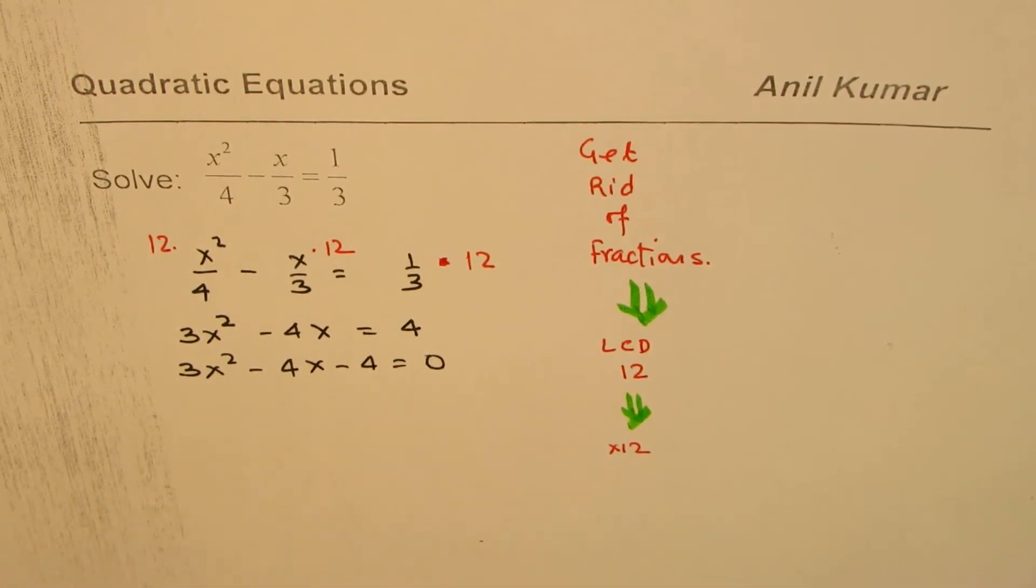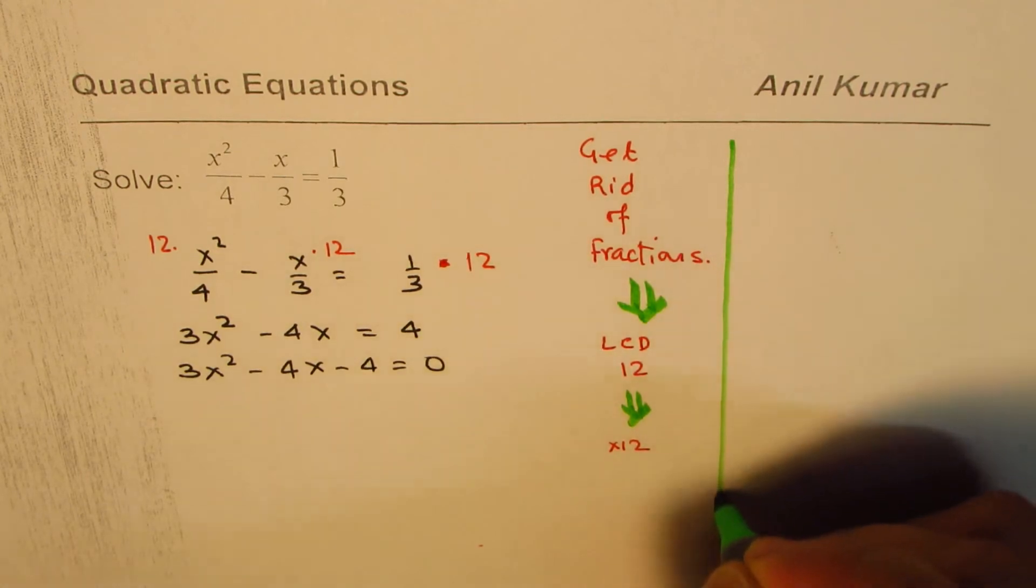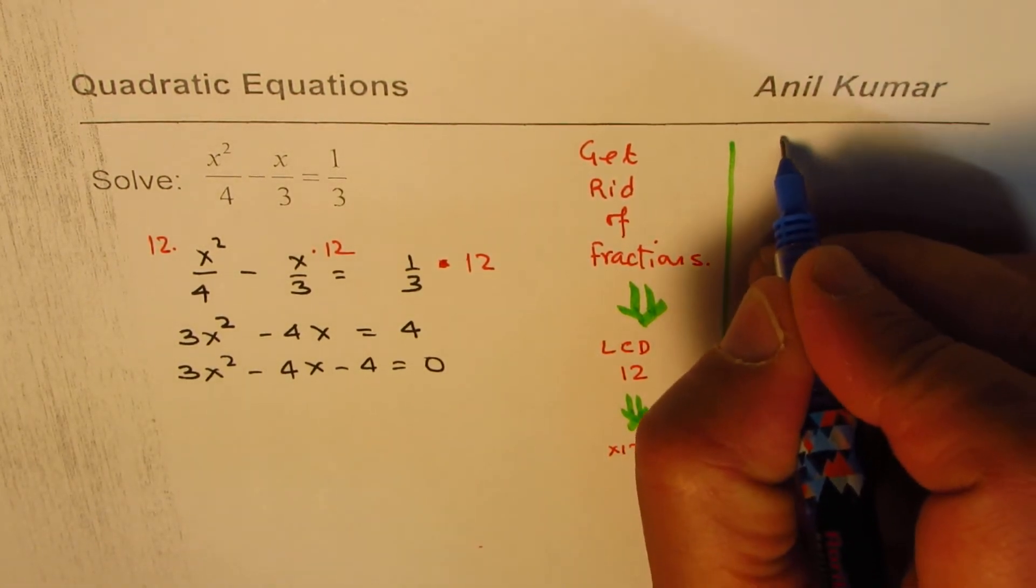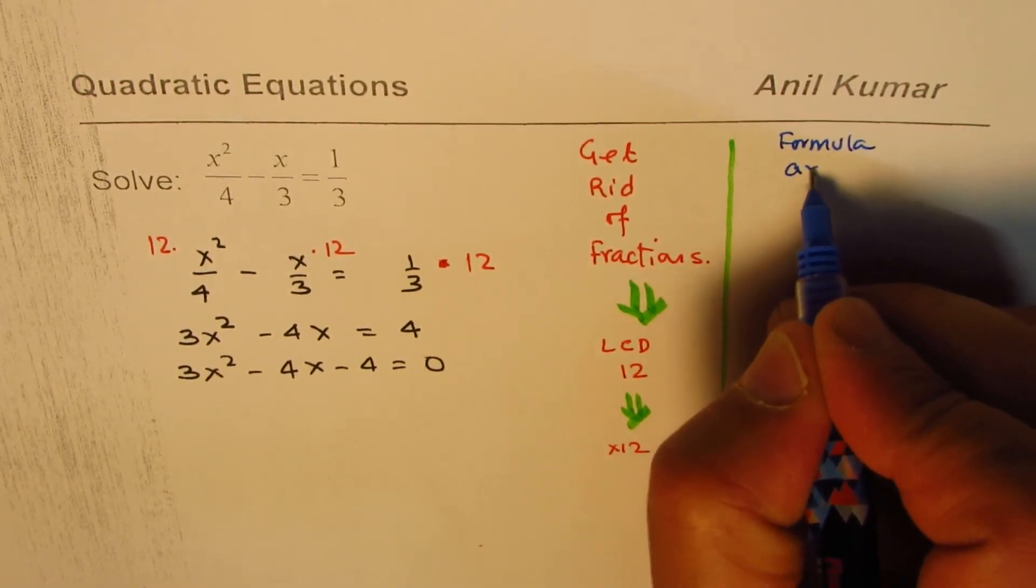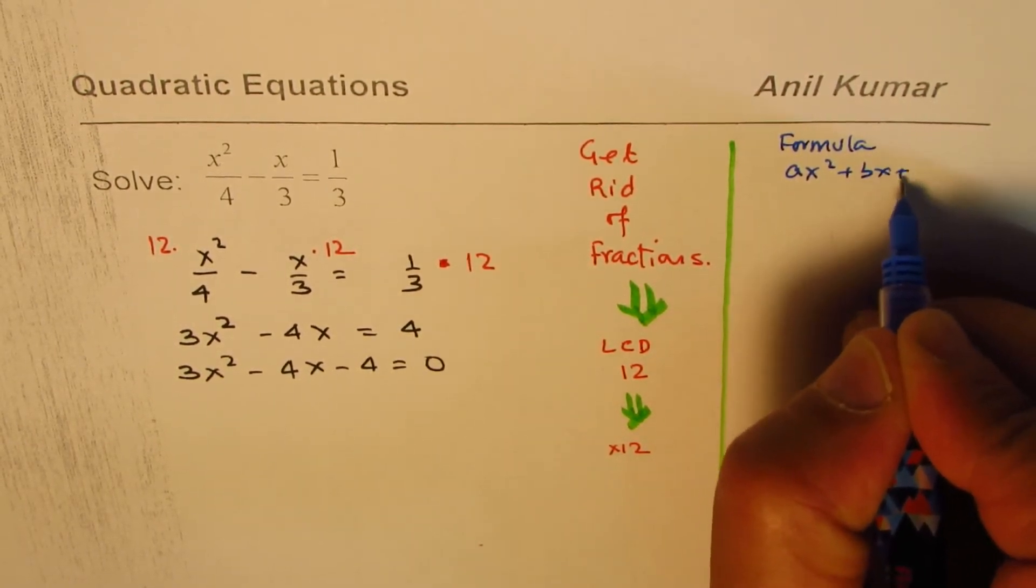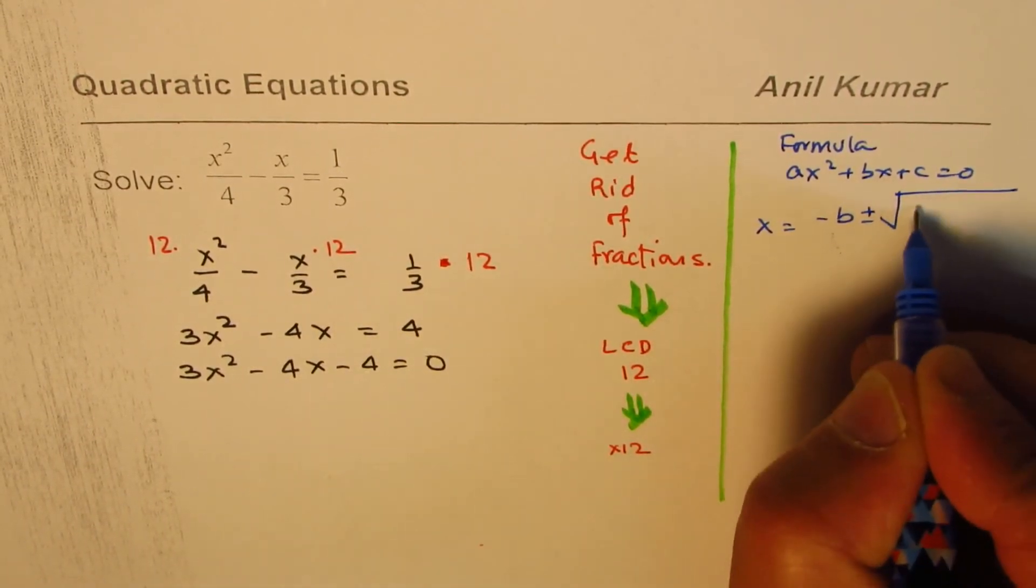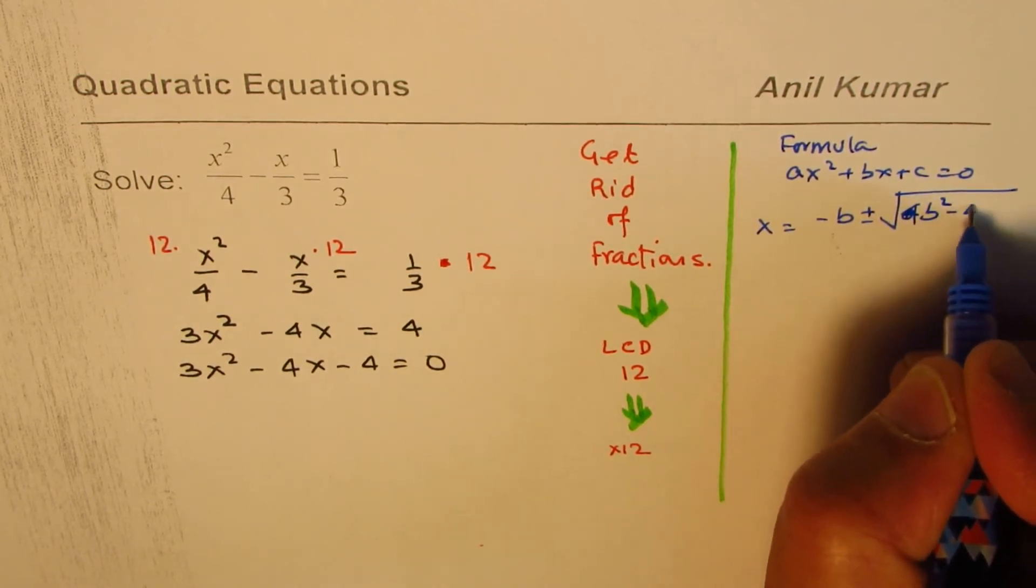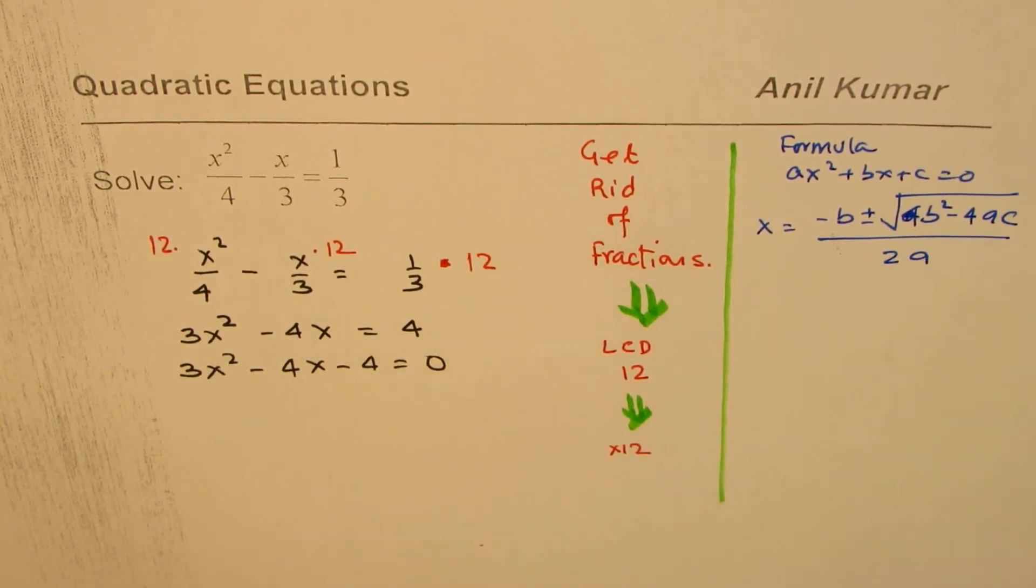Now once you have this kind of a quadratic equation, how are you going to solve? Well, there are two ways at this stage. You could use the formula. If you have equation as ax squared plus bx plus c equals 0, formula is x equals minus b plus minus square root of b squared minus 4ac, divide by 2a. So that becomes the formula.